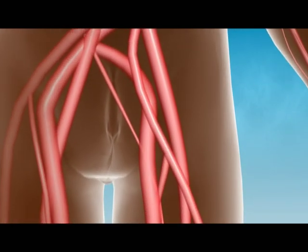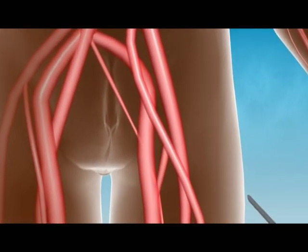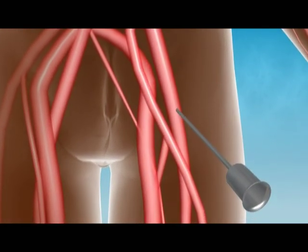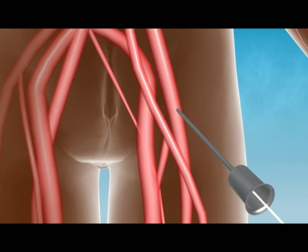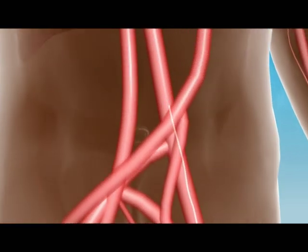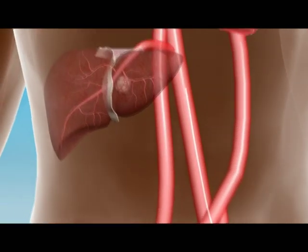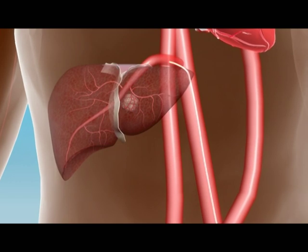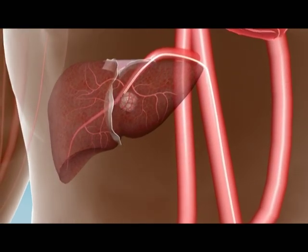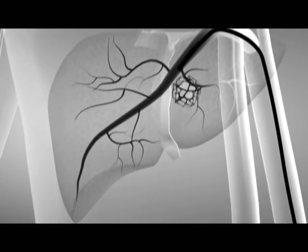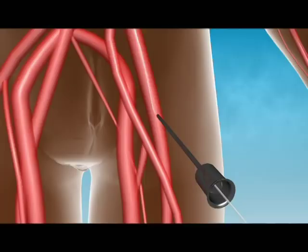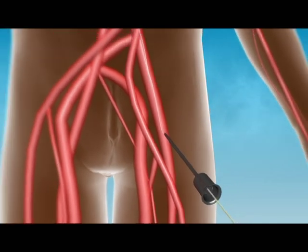With the help of femoral artery puncture, the catheter is inserted into the neighboring normal blood vessels of the tumor, and then a contrast agent is transfused into the vessels, after which the tumor size and location could be seen clearly.